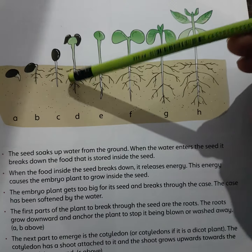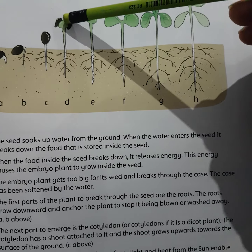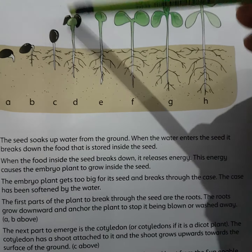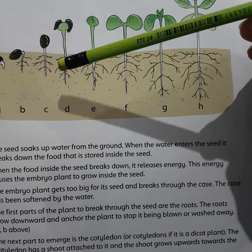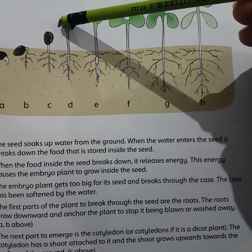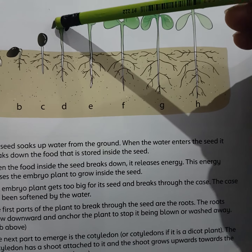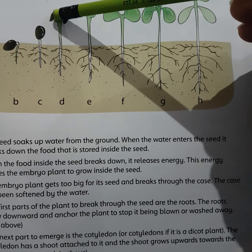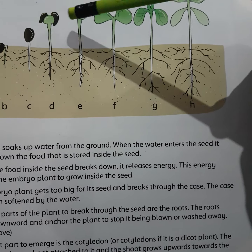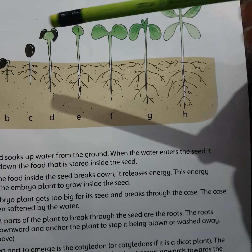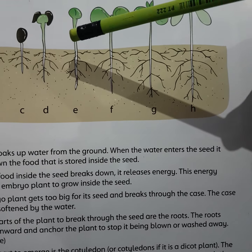جب shoot grow کرکے surface پے آتا ہے، تو یہ اپنے لیے food بنانے کے قابل ہو جاتا ہے light اور sunlight کی heat اور sunlight کی موجودگی میں — یعنی کے heat اور sunlight کی موجودگی میں، یہ اپنے لیے food بنانے کے قابل ہو جاتا ہے۔